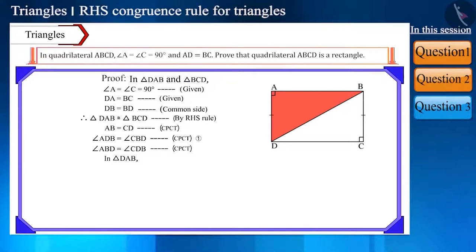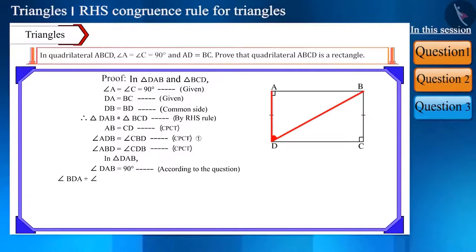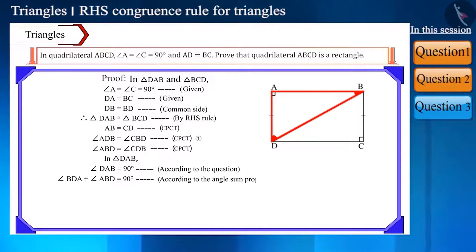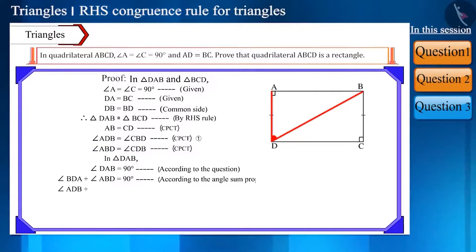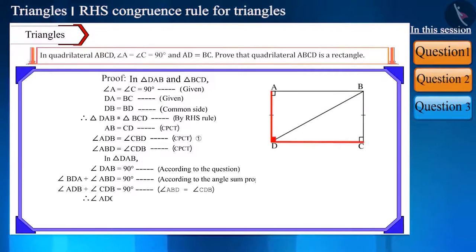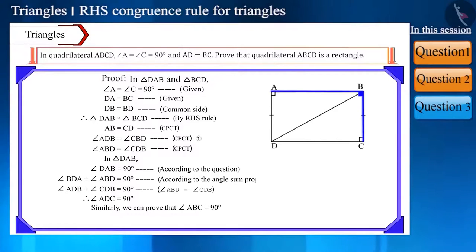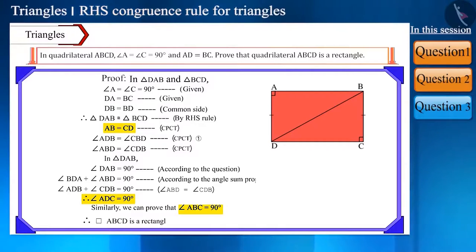Now if we look at triangle DAB, angle DAB is equal to 90 degrees. So by the angle sum property of a triangle, angle BDA plus angle ABD is equal to 90 degrees. Since angle ABD is equal to angle CDB, we can also write it as angle ADB plus angle CDB is equal to 90 degrees. That is, angle ADC is equal to 90 degrees. Similarly, we can prove that angle ABC is equal to 90 degrees. Therefore, quadrilateral ABCD is a rectangle.